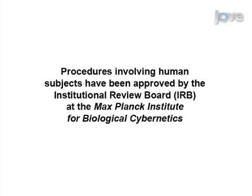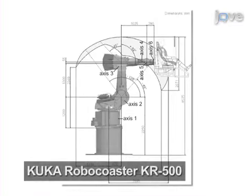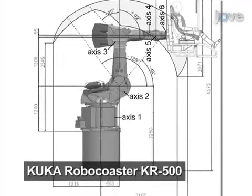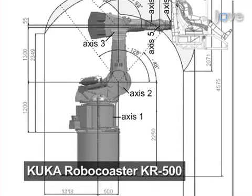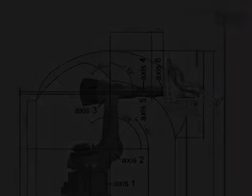The implications of this technique extend towards diagnosis of spatial disorientation because they provide a benchmark for path navigation in the normal brain. The MPI Cyber Motion Simulator consists of a six-joint serial robot in a 3-2-1 configuration.